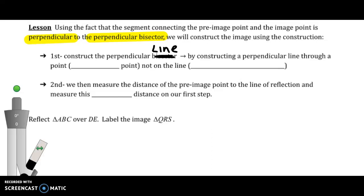So this is Unit 3, Lesson 2. We are actually going to construct the image given a line of reflection and a pre-image. We're going to use the fact that the pre-image point and the image point is perpendicular to, if we connect those two, that line segment is perpendicular to the perpendicular bisector, which is your line of reflection. And keep in mind that we know that each point is equidistant from that line of reflection. And those are the two things that we're using here.